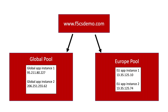In this demo, we're going to build a load balancing configuration to help ensure GDPR compliance by directing traffic from the European Union to app instances in the EU. Let's assume our demo application is at f5csdemo.com. We'll use two app instances to handle clients globally, and another two instances specifically located in the EU.